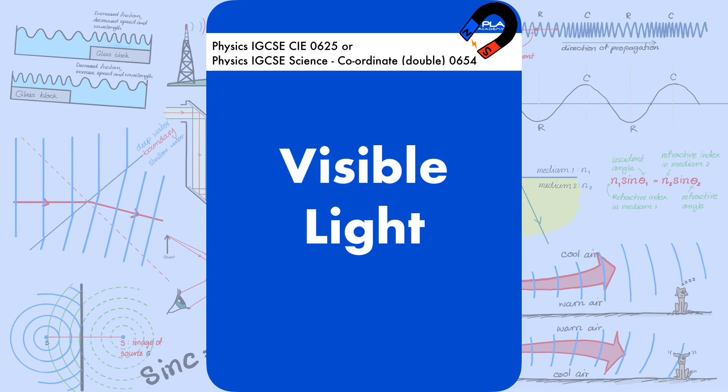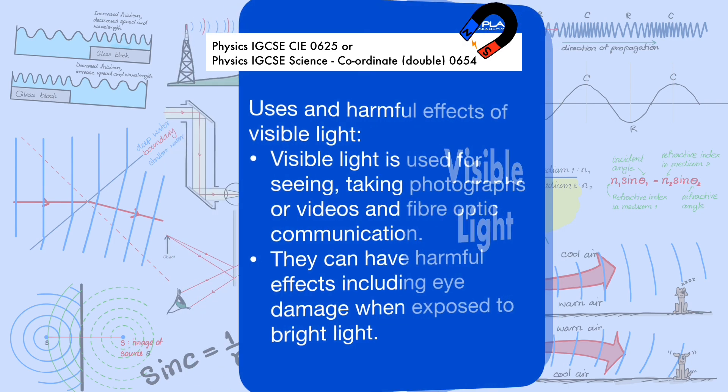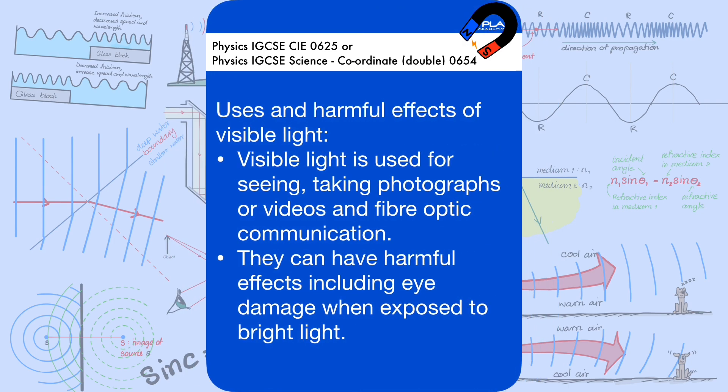Visible light is used for seeing, taking photographs or videos, and fiber optic communication. It can have harmful effects including eye damage when exposed to bright light.